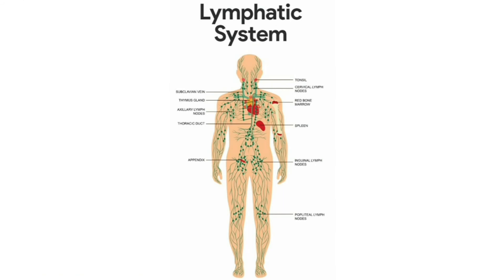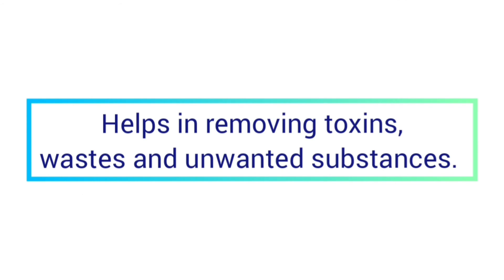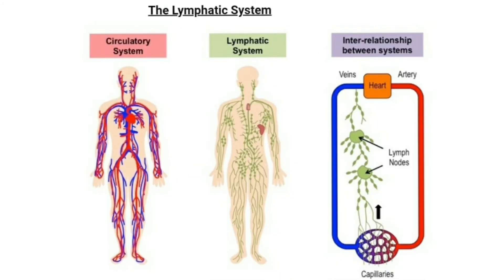Now we are going to learn about the lymphatic system. In addition to the circulatory system, the human body also has a lymphatic system. It is an organ system with a network of tissues and organs. The lymphatic system helps the body to get rid of toxins, waste materials, and unwanted substances. The lymphatic system is also a part of the immune system — it is a part of both the circulatory system and the immune system.